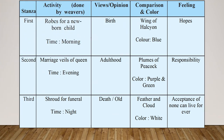In the first stanza, the weavers are working in the morning. They are weaving the robes of a newborn child. The newborn child relates to birth and childhood. The feelings during childhood are all about hopes and expectations of the future. The poet has compared the garment to the wing of a halcyon bird. The colour is blue.